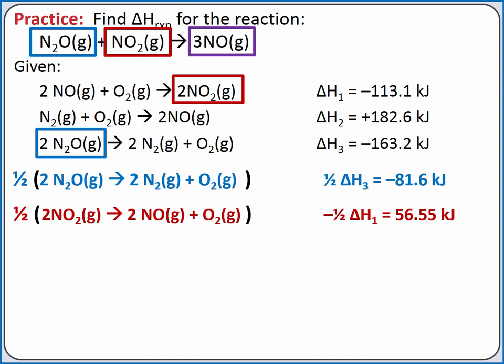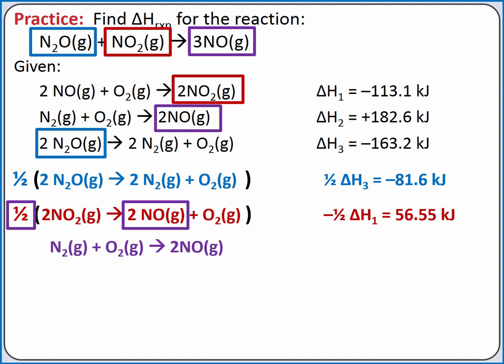The last compound in the overall reaction is nitrogen monoxide. We want three moles of nitrogen monoxide as a product. We already have one mole of nitrogen monoxide as a product from the equation we just used, so we need two more moles. Our last equation has two moles of nitrogen monoxide as a product, so we can add this equation as it is. Since we didn't adjust the equation in any way, we can also add the enthalpy of reaction as is.